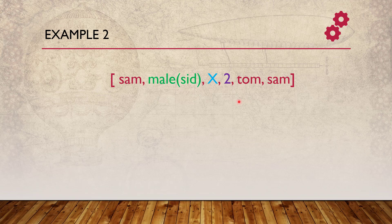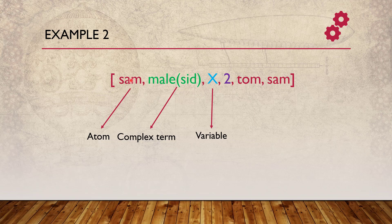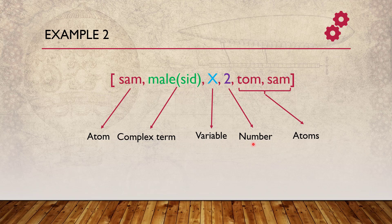Let us take a more complex example. Here, one item is an atom, another is a complex term (we talked about complex terms before), X starting with a capital letter is a variable, 2 is a number, and Tom and Sam are both atoms. This is very interesting because a Prolog list can contain all different kinds of terms together — it is not necessary that all elements be the same type. It can contain atoms, complex terms, and variables. In the future we will see it can contain another list as well.